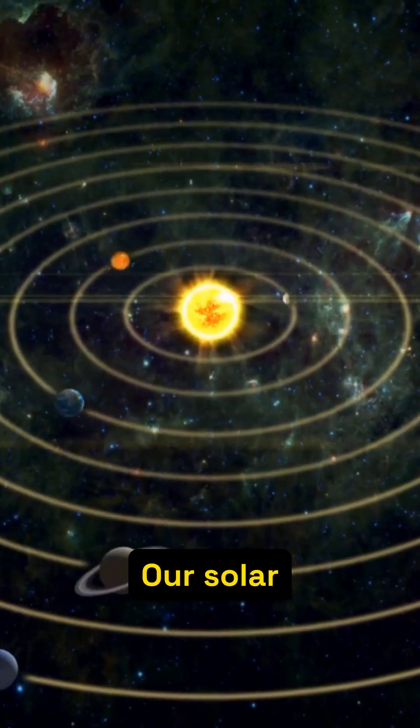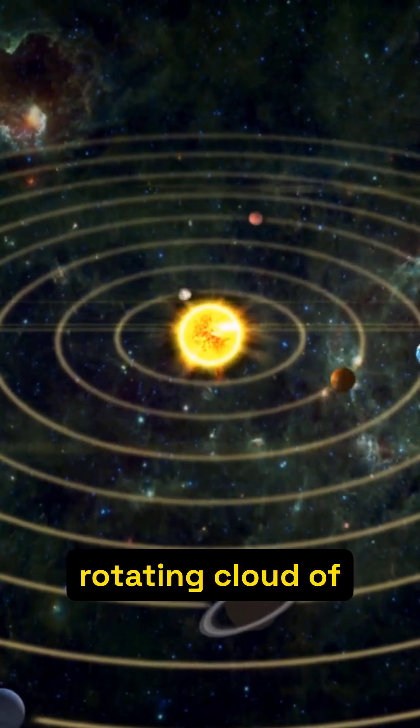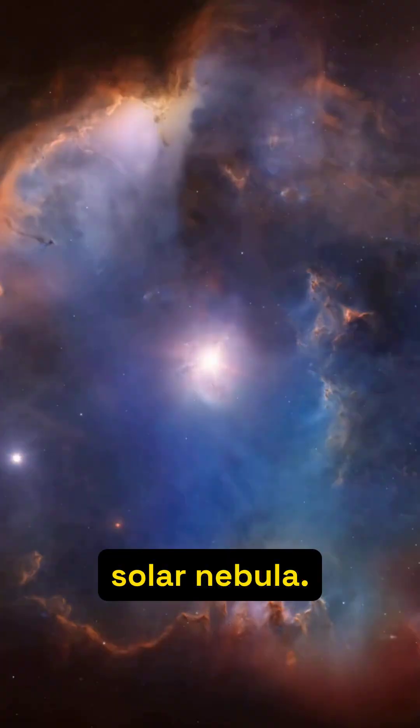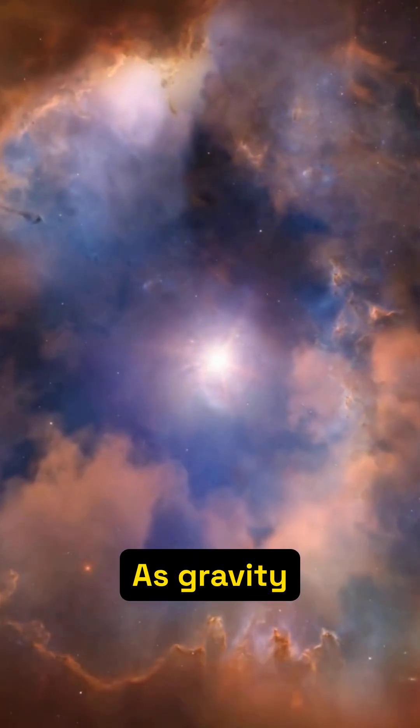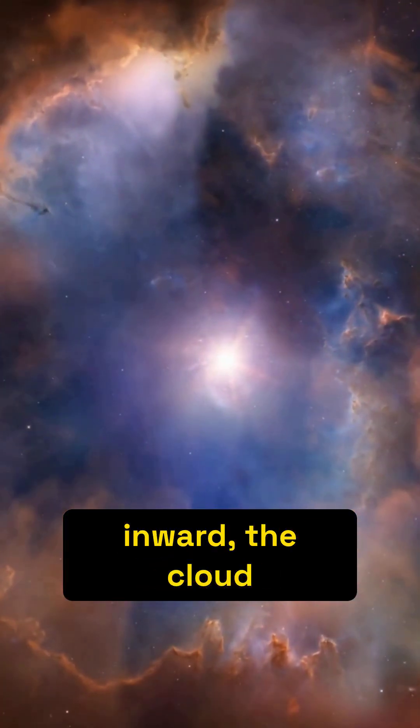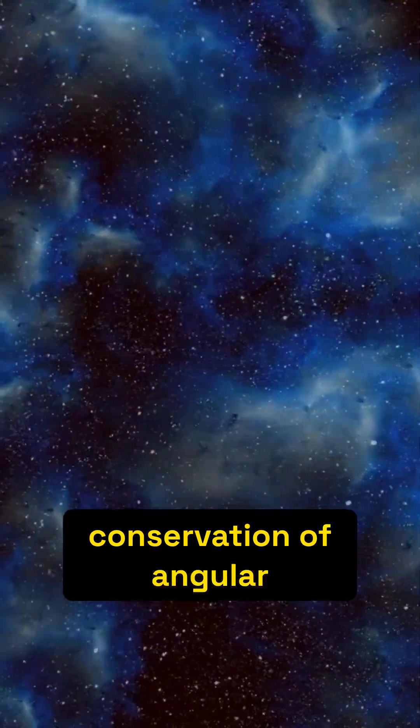Our solar system began as a vast, rotating cloud of gas and dust, the solar nebula. As gravity pulled this material inward, the cloud spun faster due to the conservation of angular momentum.